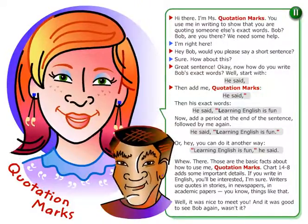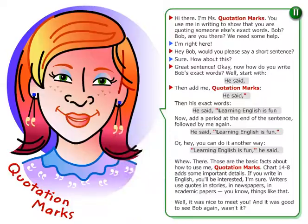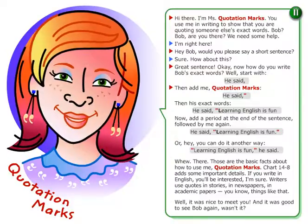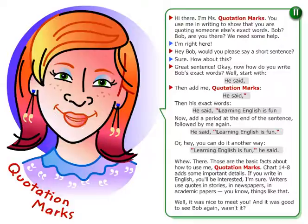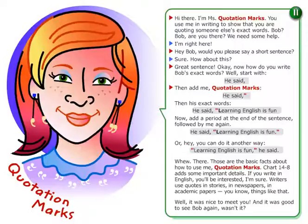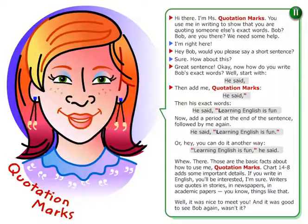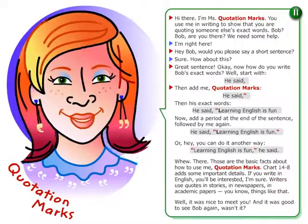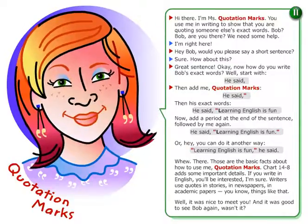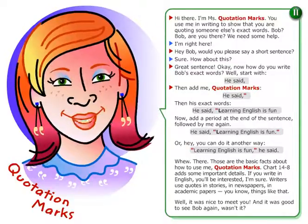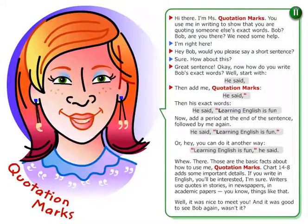Okay, now how do you write Bob's exact words? Well, start with: He said, comma, then add me — quotation marks. He said, comma, quotation marks, then his exact words. He said, comma, quotation marks, capital letter, Learning English is fun.